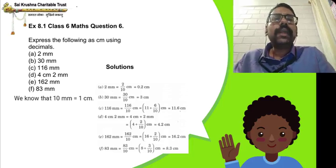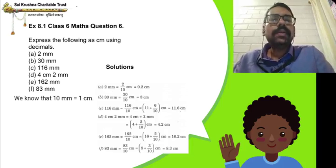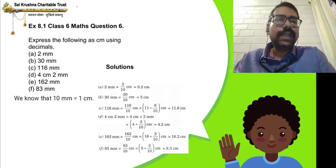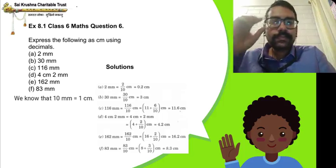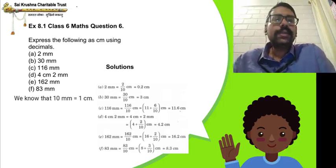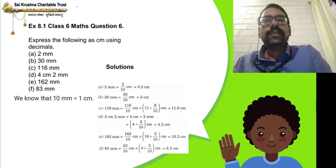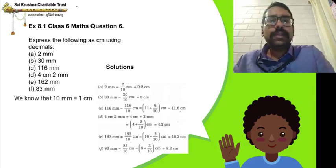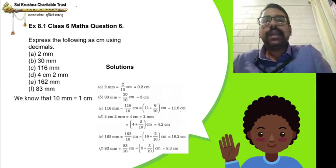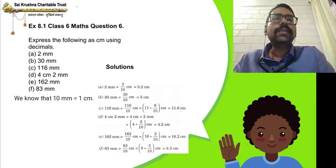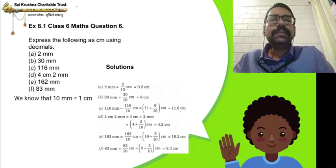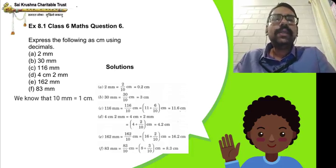2 millimetres is 2 divided by 10 centimetres, which is equal to 0.2 cm. 30 millimetres is 30 divided by 10 centimetres, which is 3 cm. 116 millimetres is 116 divided by 10 centimetres. In 10 there is one zero, so go back one step before 6 and put the decimal point there. We get 11.6 centimetres.